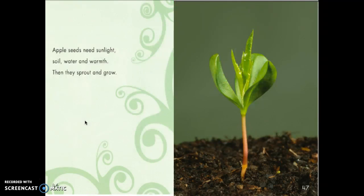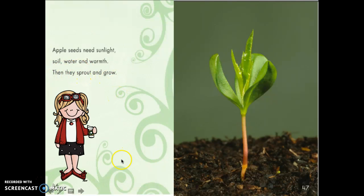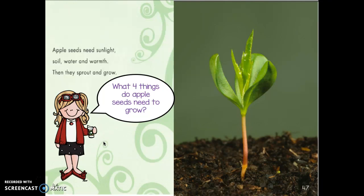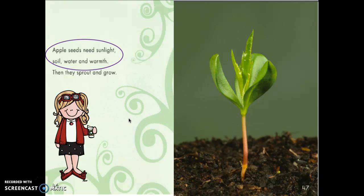You're doing such a great job! Let's try some more. Apple seeds need sunlight, soil, water, and warmth — then they sprout and grow. What four things do apple seeds need to grow? Can you find it in the text? There it is: apple seeds need sunlight, soil, water, and warmth. Great job finding text evidence!